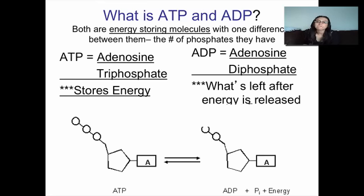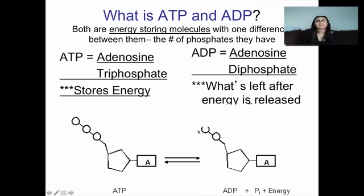ATP versus ADP. ATP stands for adenosine triphosphate. Tri means three — if you look at the molecule, these are the phosphates: one, two, three phosphates on ATP. ADP means adenosine diphosphate — di means two, so one, two phosphates. ATP and ADP are actually the same molecules. What happens is when we go through cellular respiration, we add another phosphate onto the ADP molecule and that turns it from ADP into ATP.